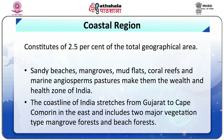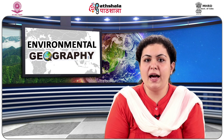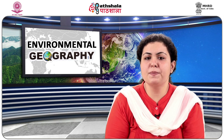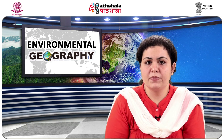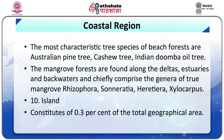Ninth is the Coastal Region, constituting 2.5% of the total geographical area. Sandy beaches, mangroves, mudflats, coral reefs and marine angiosperm pastures make this a wealth and health zone of India. The coastline stretches from Gujarat to Cape Comorin and includes two major vegetation types: mangrove forests and beach forests. The most characteristic tree species of beach forests are Australian pine, cashew tree, and Indian dumba oil tree. The Lakshadweep, comprising 25 islets of coral origin, has a typical reef lagoon system rich in biodiversity, though the densely populated islands virtually have no natural vegetation. Mangrove forests are found along deltas, estuaries and backwaters and chiefly comprise true mangrove genera: Rhizophora, Sonneratia, Heritiera and Xylocarpus.